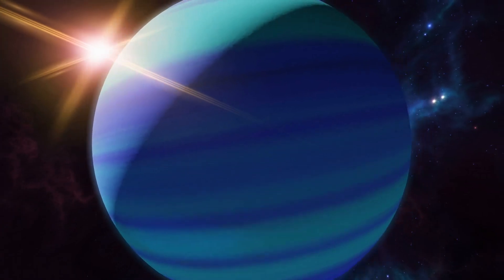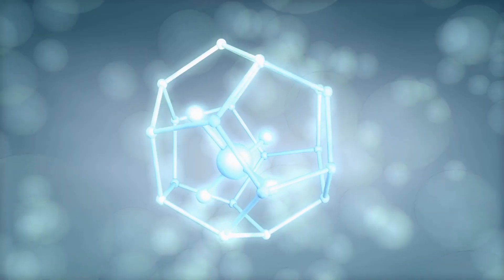Neptune appears notably blue in images captured by the Hubble Space Telescope at visible wavelengths due to small amounts of gaseous methane.